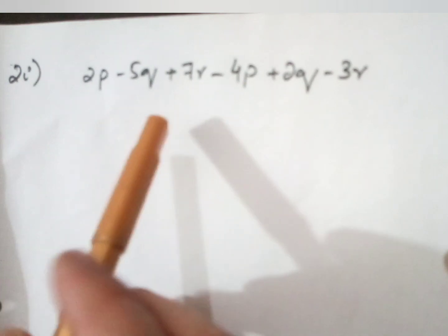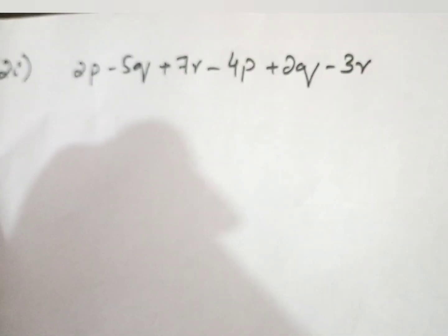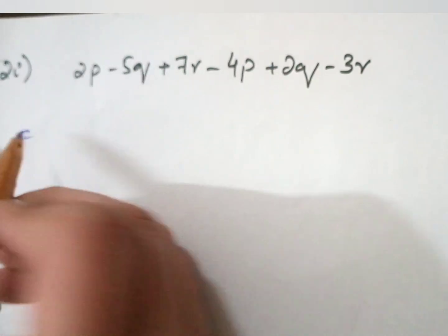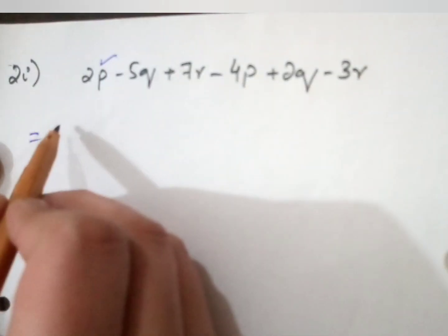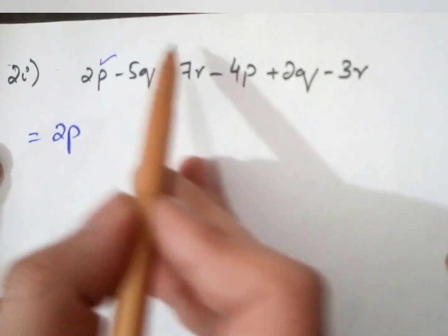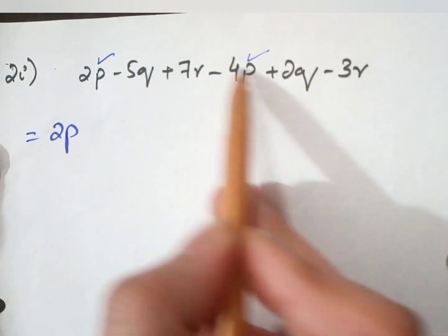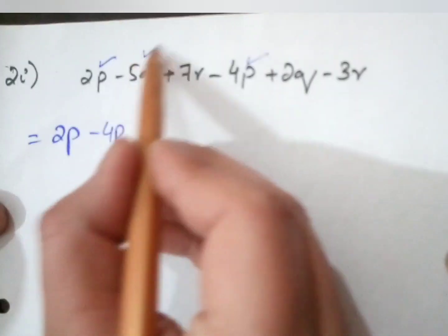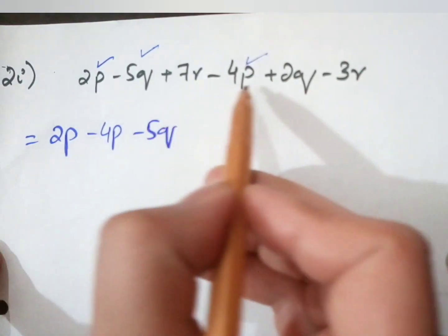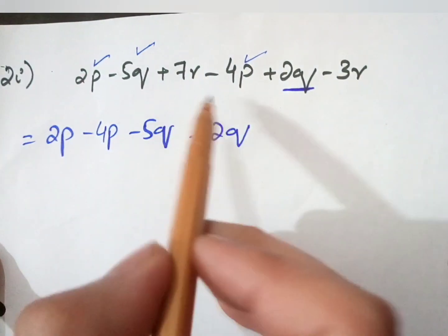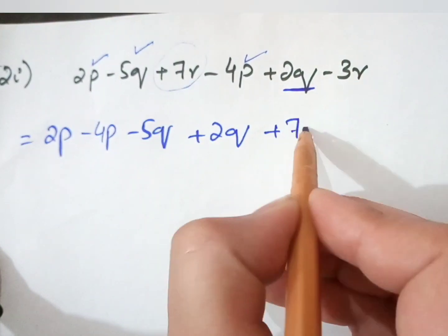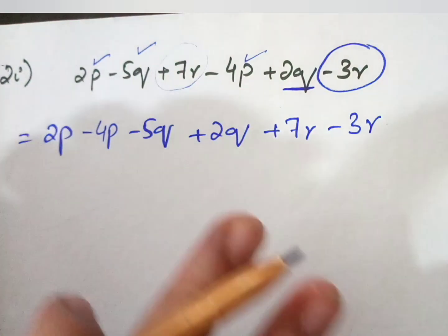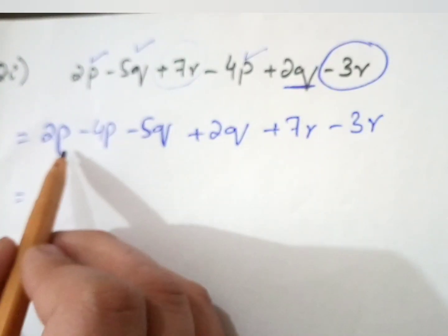Now we have Question 2 Part 1: simplify the expression. You can see we have p, p, and p terms. First we rewrite the question and write the terms with the same variable together. For p: 2p and minus 4p. For q: minus 5q and plus 2q. For r: plus 7r and minus 3r. Now arrange all the terms placing the same variable terms together.